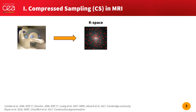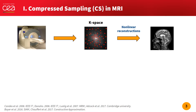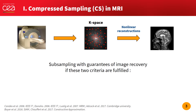To speed up the acquisition, one strategy is to under-sample the k-space, and then use compressed sensing theory to recover the image using non-linear reconstructions. Because MRI images are compressible, compressed sensing works well in MRI, but only if the sampling fulfills certain criteria.